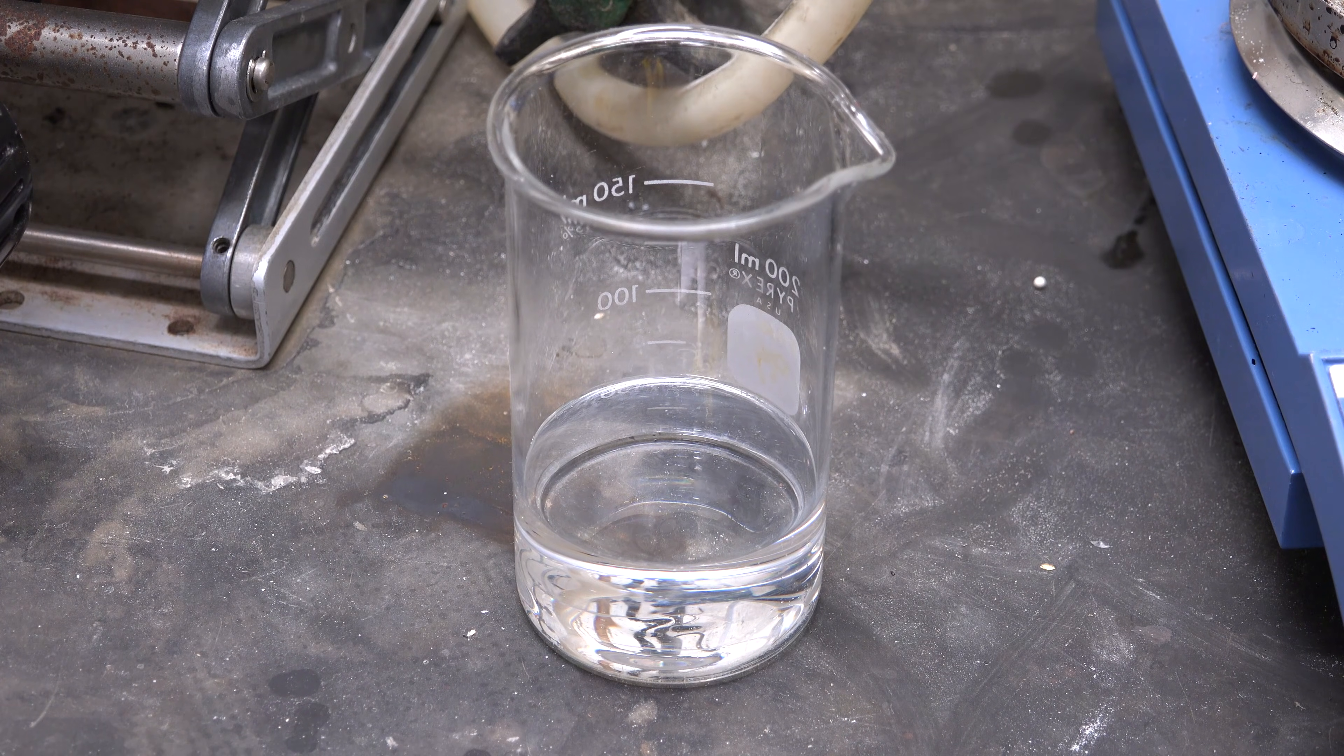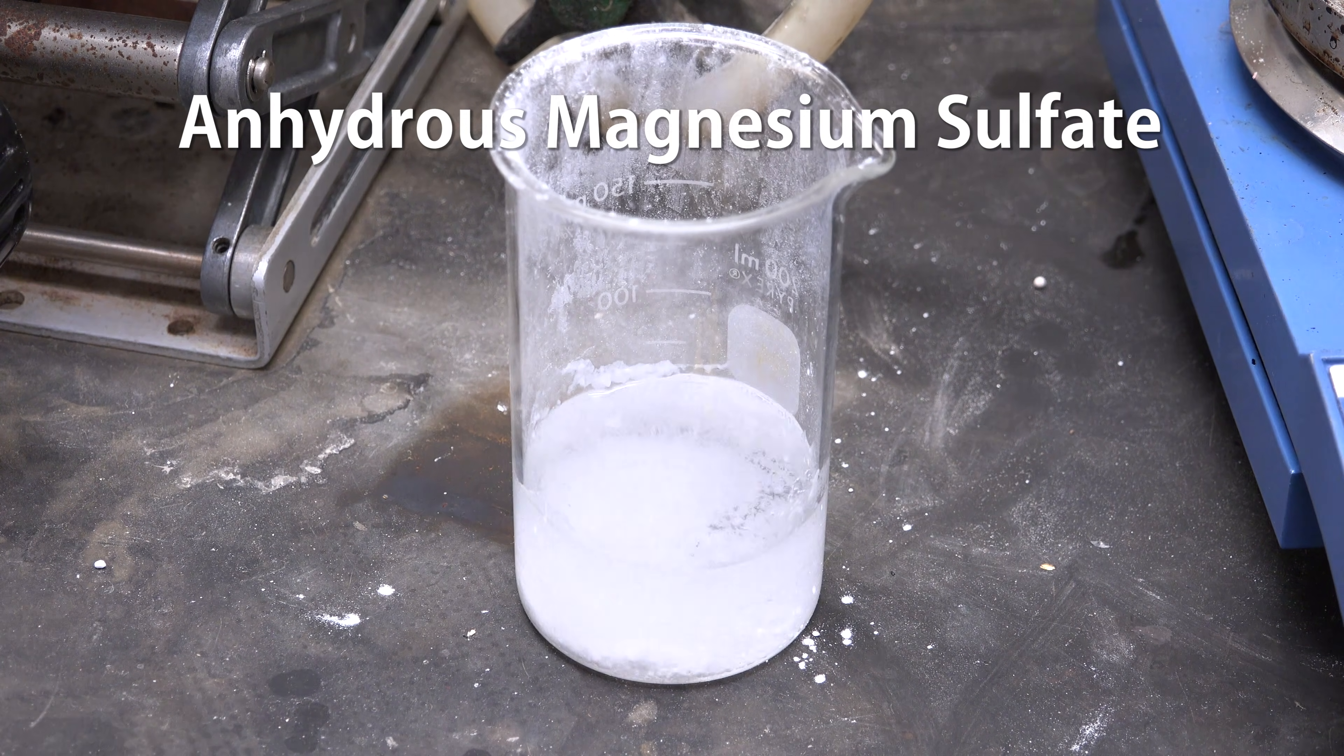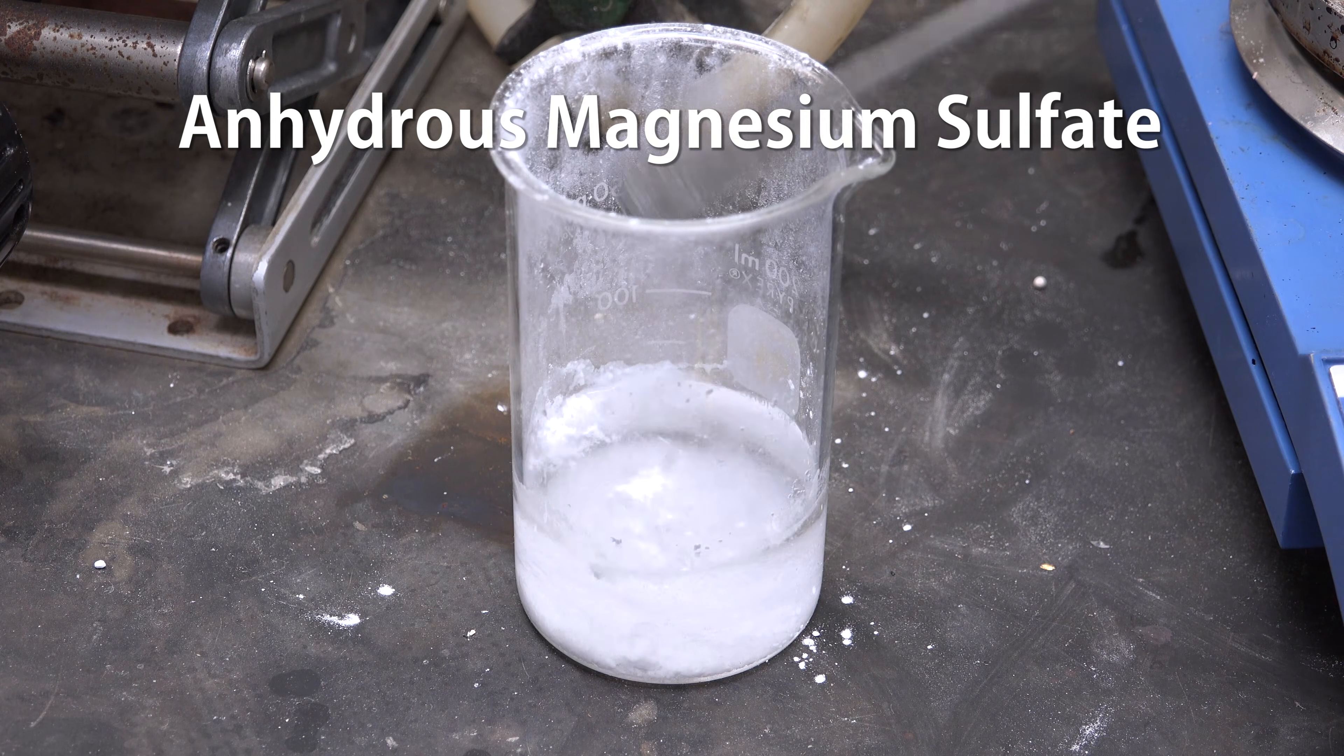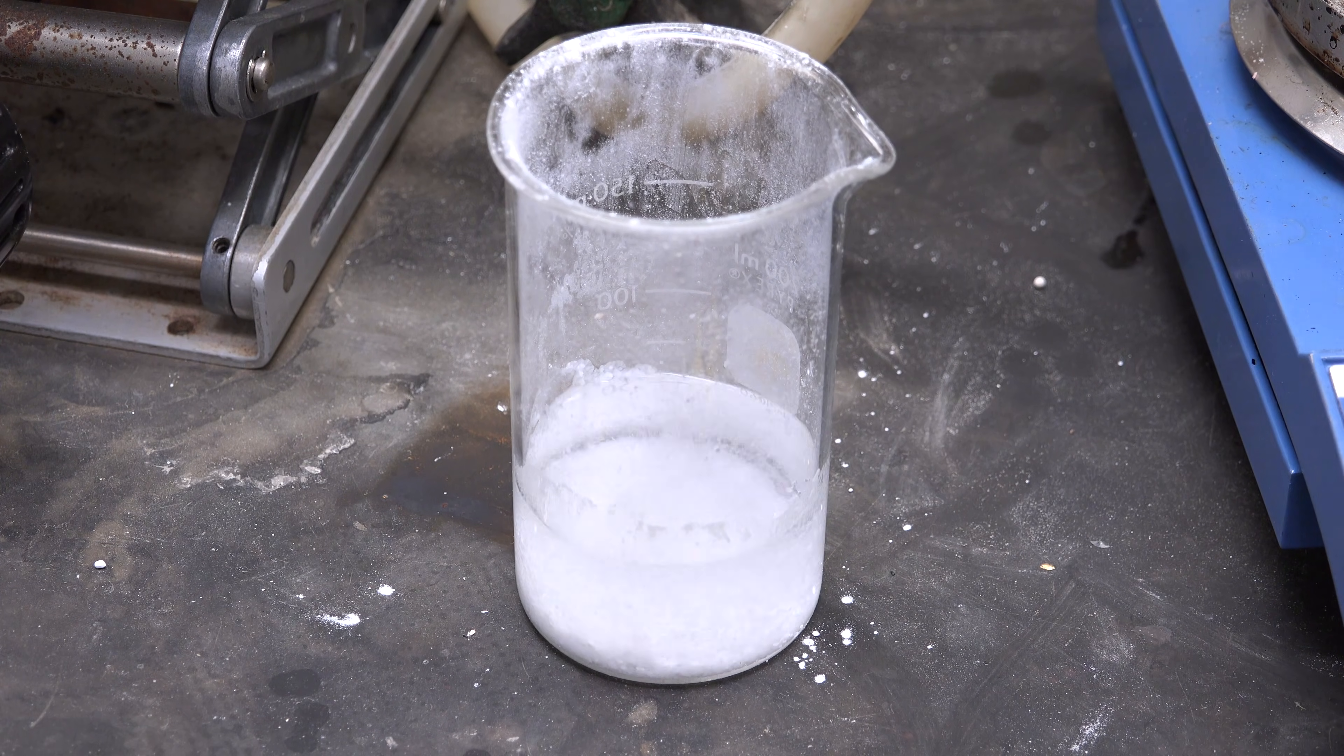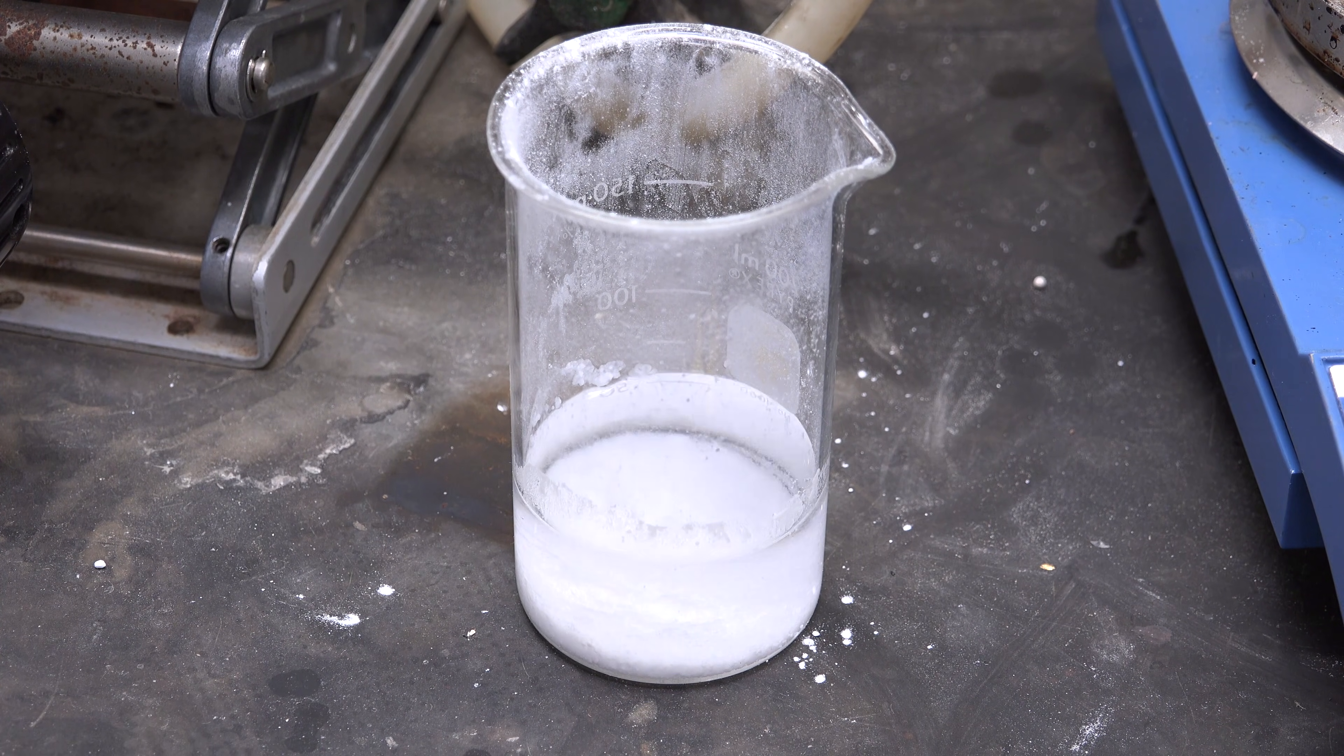And here is our bromoethane. It has trace water dissolved in it so you can add anhydrous magnesium sulfate if you wish to remove it. It also contains small amounts of diethyl ether. I'm going to leave that in but if you wish to purify it further then you can use fractional distillation and collect the fraction that boils at 38 degrees celsius.